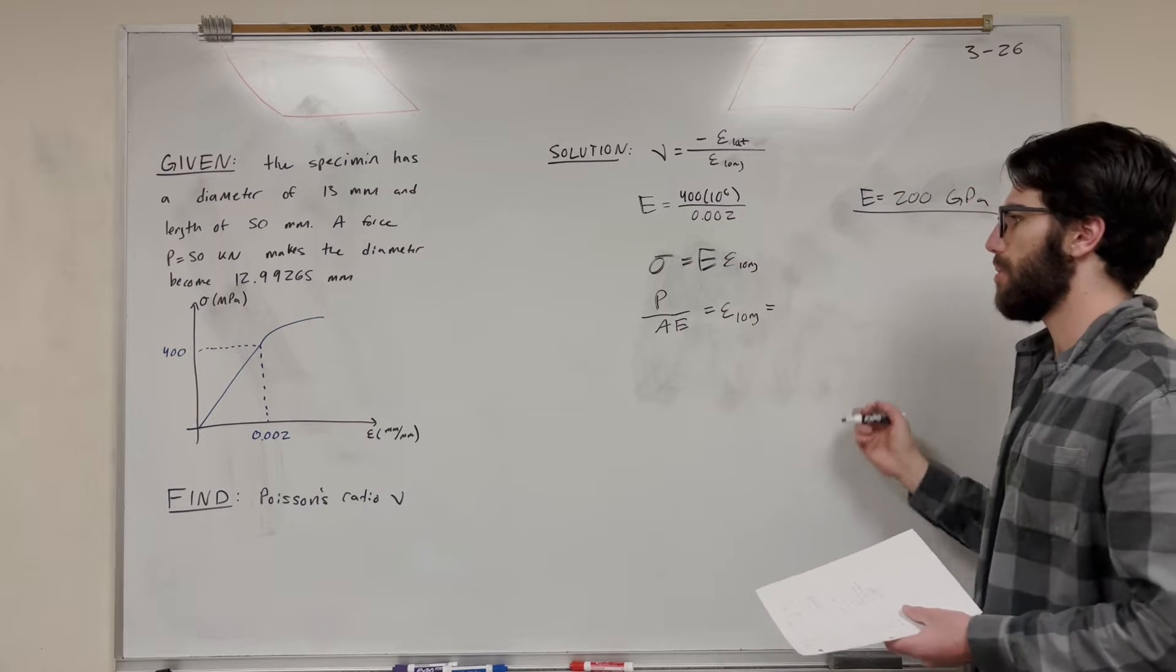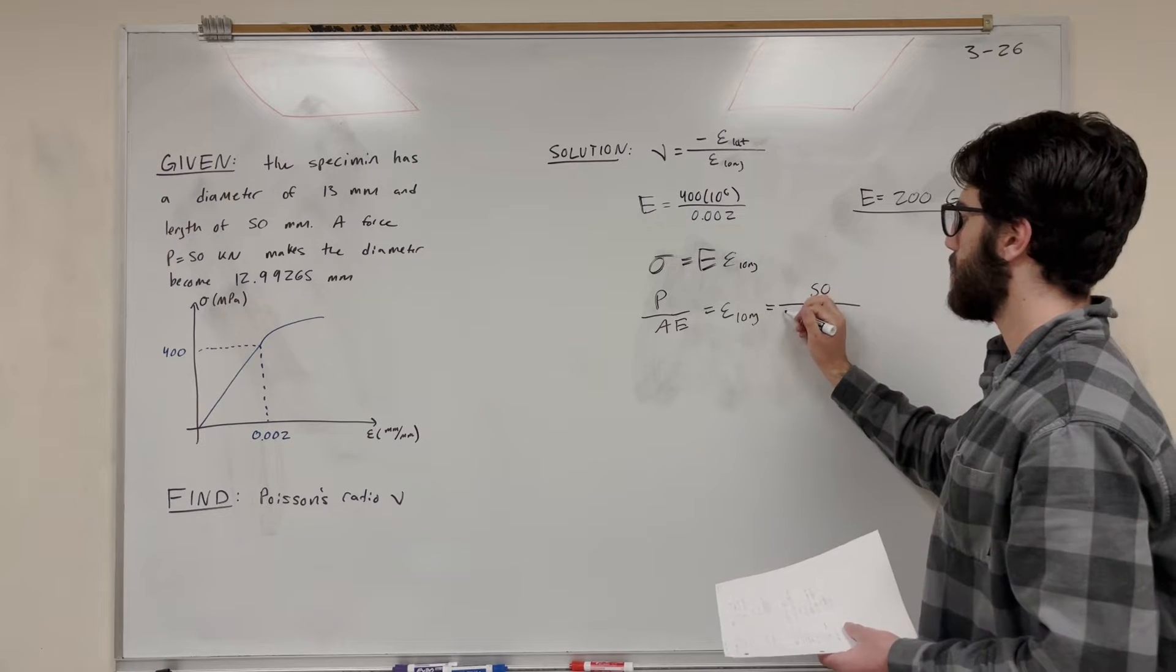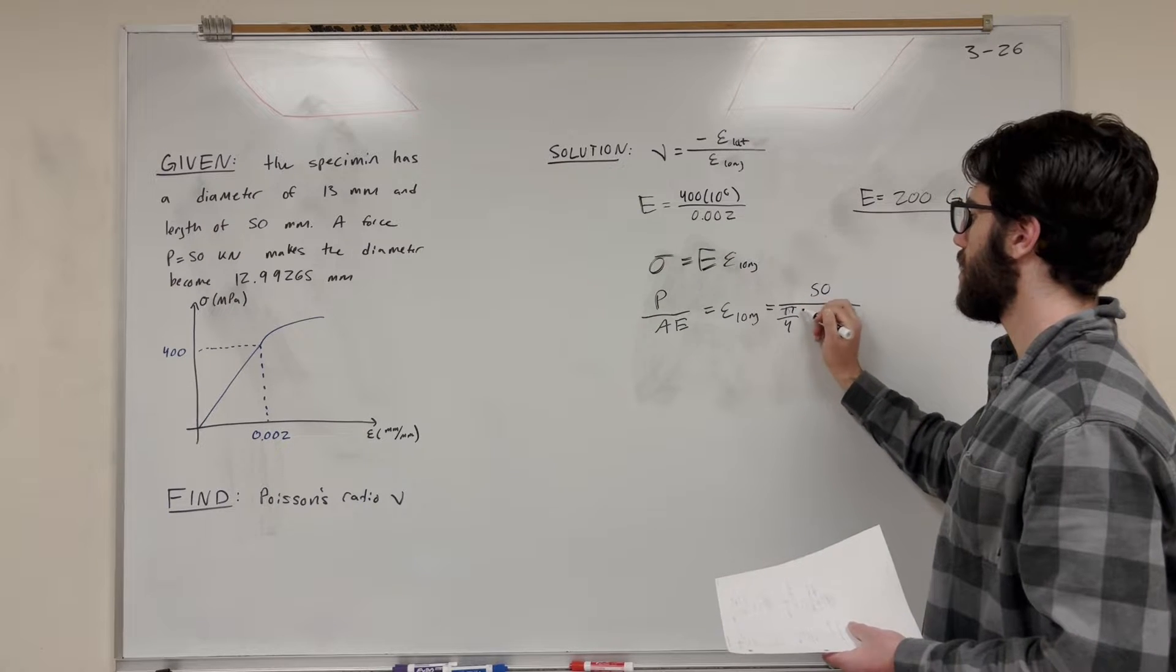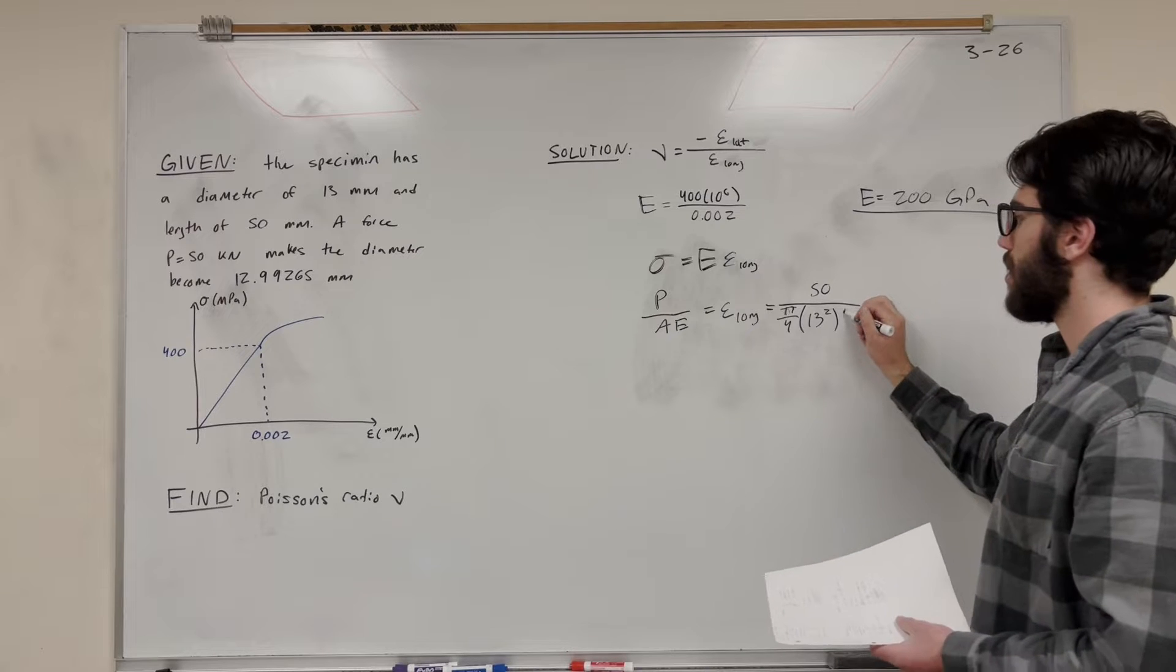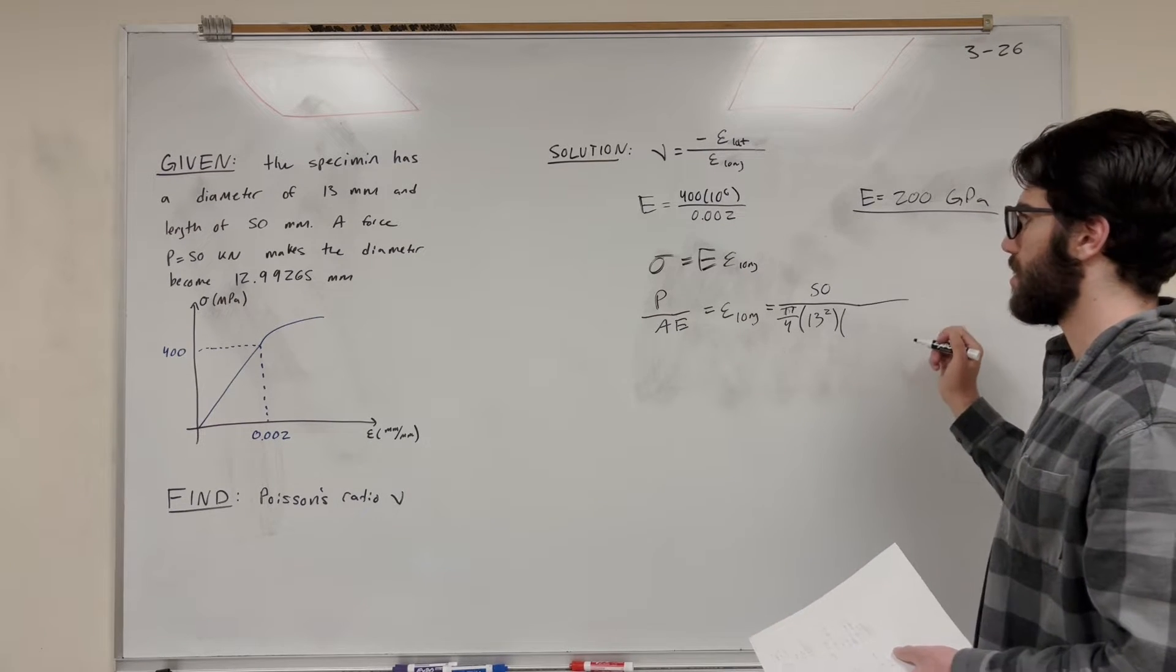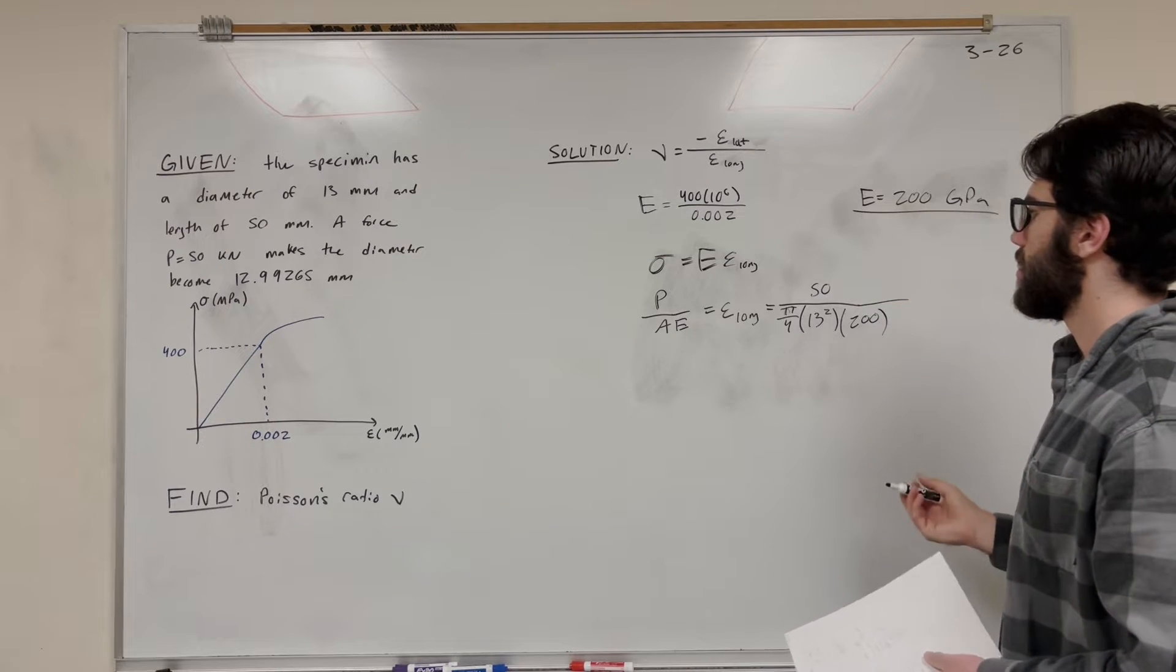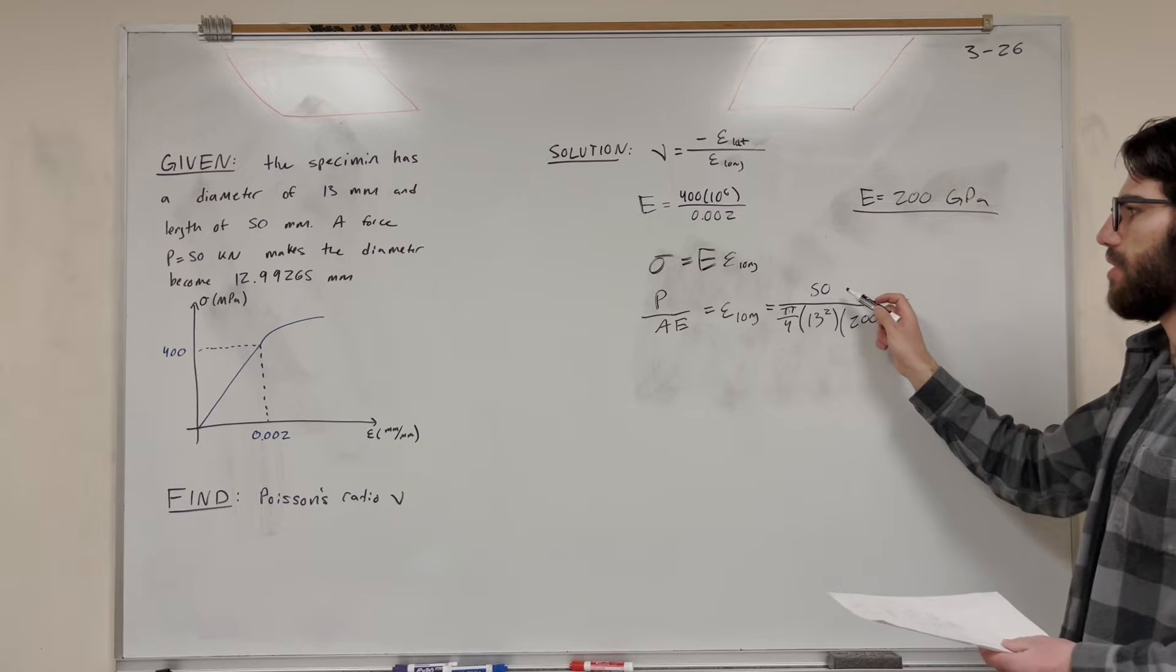So you get P over AE is equal to strain in the long direction. And now we know all these things. So let's plug in our numbers. So force is 50 kilonewtons. Area is pi over 4 diameter squared, pi over 4. And diameter is 13, 13 squared. We use our original diameter here, not the new diameter. And then we use E, so we count as 200. So these units are kind of wacky, but they end up actually working out just fine.